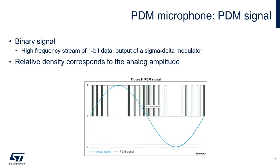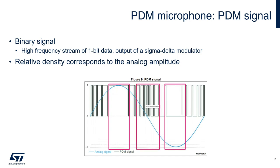Let's focus on two keywords of the PDM definition. PDM is a binary signal. It consists of a high frequency stream of one-bit data, which can be either 1, representing a positive pulse, or 0, representing a pulse of negative polarity. The relative density of the pulses corresponds to the analog signal's amplitude. So, a run consisting of all 1s would correspond to the maximum positive amplitude value. All 0s would correspond to the minimum negative amplitude value, and alternating 1s and 0s would correspond to a 0 amplitude value.